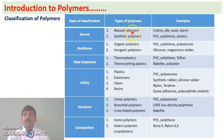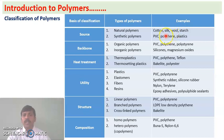Natural polymers are the polymers which we get from nature. Examples are cotton, silk, wool, and starch. Cotton, silk, wool, and starch are all obtained from nature, so they are considered natural polymers.